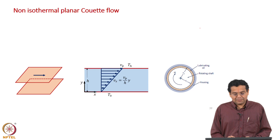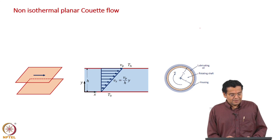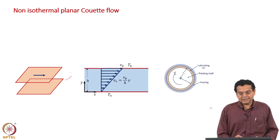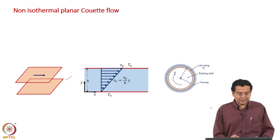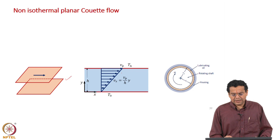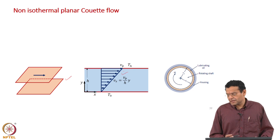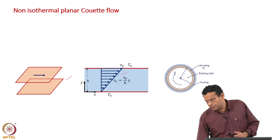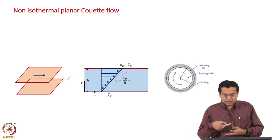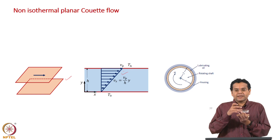Let us proceed to the next example — a very familiar example. The flow between two parallel plates, with the top plate set in motion, which is a planar Couette flow. We have solved the velocity profile earlier, but now we are going to take the two plates to be at two different temperatures.